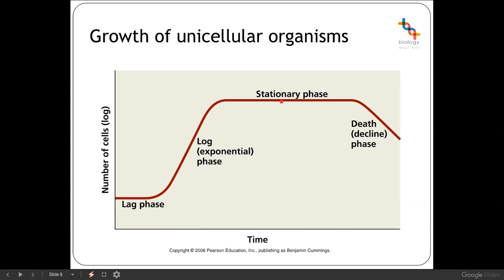The stationary phase is often one of the most useful phases in industry, as this is when secondary metabolites begin to build up. During the log phase, metabolites produced are those required for growth and cell division. In the stationary phase, organisms that remain and still have raw materials can start producing these secondary metabolites. These may have conferred advantages in the wild — for example, filamentous fungi produce antibiotics which would kill competing bacteria in soil. In industry, we take those secondary metabolites — those antibiotics — as our final product.